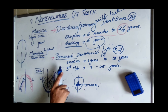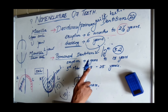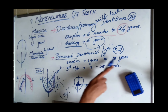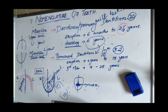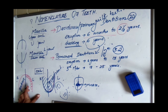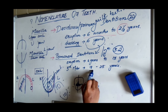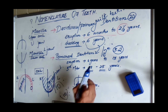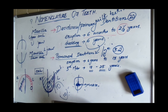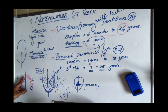The permanent dentition erupts from six years to thirteen years. However, not all teeth erupt by thirteen — only up to the second molar. The third molar has a different eruption age of eighteen to twenty-five years, with a wide variation. In permanent dentition, we have thirty-two teeth.